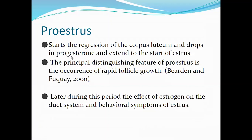Proestrus is another phase. The principal distinguishing feature of proestrus is the occurrence of rapid follicle growth. During this period, the effect of estrogen on the duct system and behavioral symptoms of estrus are exhibited by the animal. You really have to count the days because you need to know the ovulation period — knowing the dates of ovulation will increase your success in mating or insemination.